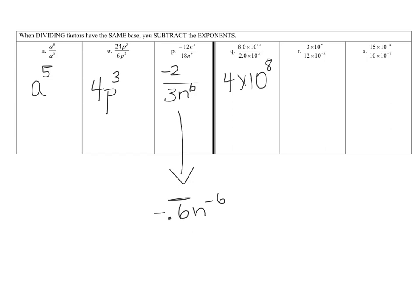The next one has 3 over 12. Think of 3 twelfths as 1 fourth — and since 1 fourth is not allowed as part of scientific notation, write it as a decimal: 1 divided by 4 is 0.25. For the exponents, subtract top minus bottom: 9 minus negative 3 is the same as 9 plus 3, which is 12. But 0.25 is not in scientific notation — it needs to be 2.5, which has an exponent of negative 1 on it. Adding negative 1 to 12 gives 10 to the 11th.